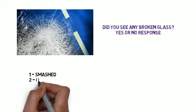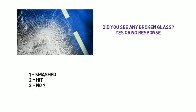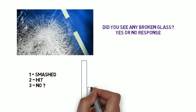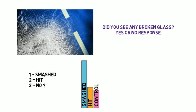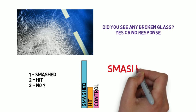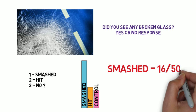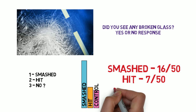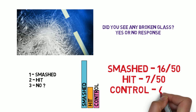Remember, condition one had smashed, two hit, three had nothing to do with estimating speed at all. The results showed those people in the smashed condition were more likely to say they saw broken glass. In fact, 16 out of 50. Hit was 7 out of 50, which is right close to the control, which was 6 out of 50.